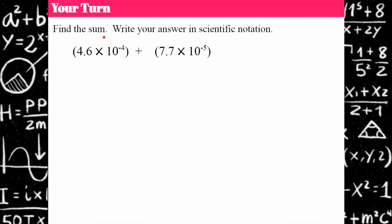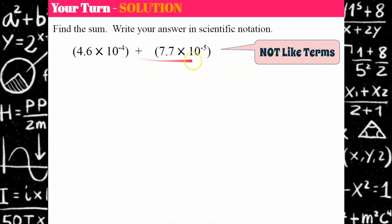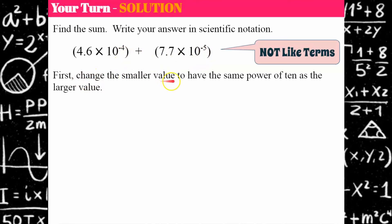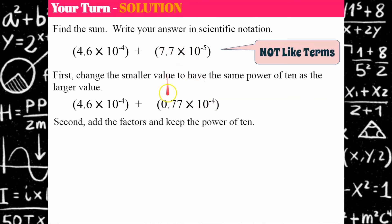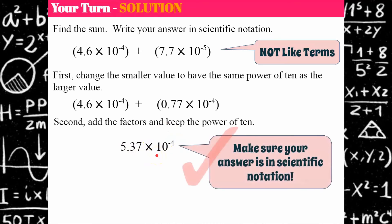Now it's your turn — find the sum and make sure your answer is written in scientific notation. Welcome back. These are not like terms; they have two different exponents. So the first thing I'm going to do is change the smaller value to have the same power of 10 as the larger. Negative 4 is larger than negative 5, so I'll convert to 10 to the negative 4. As the exponent got larger by 1, the factor had to get smaller by 1. So 4.6 plus 0.77 is 5.37, and we keep the power of 10. The answer is in scientific notation, so I'm done.